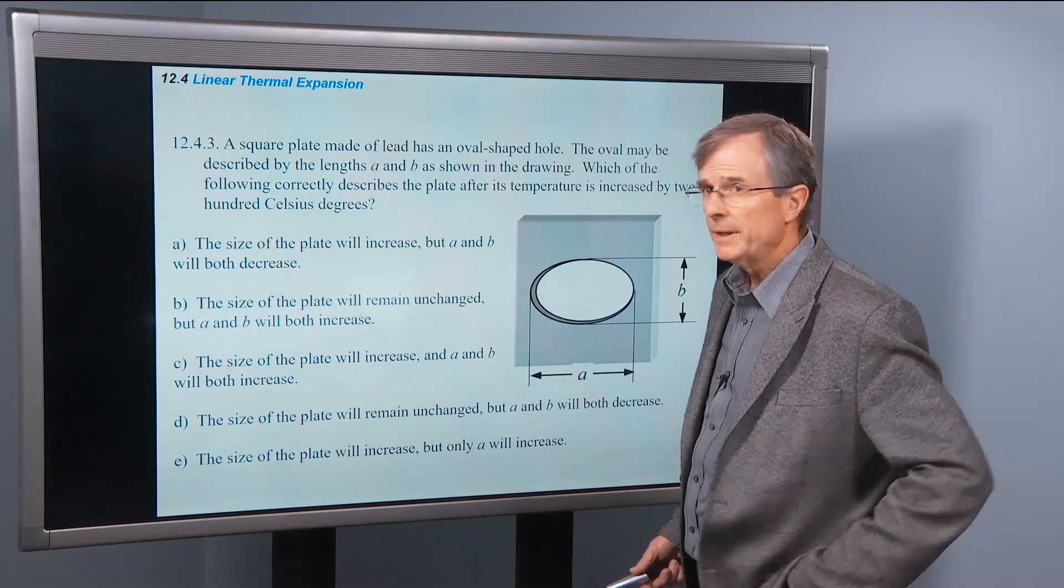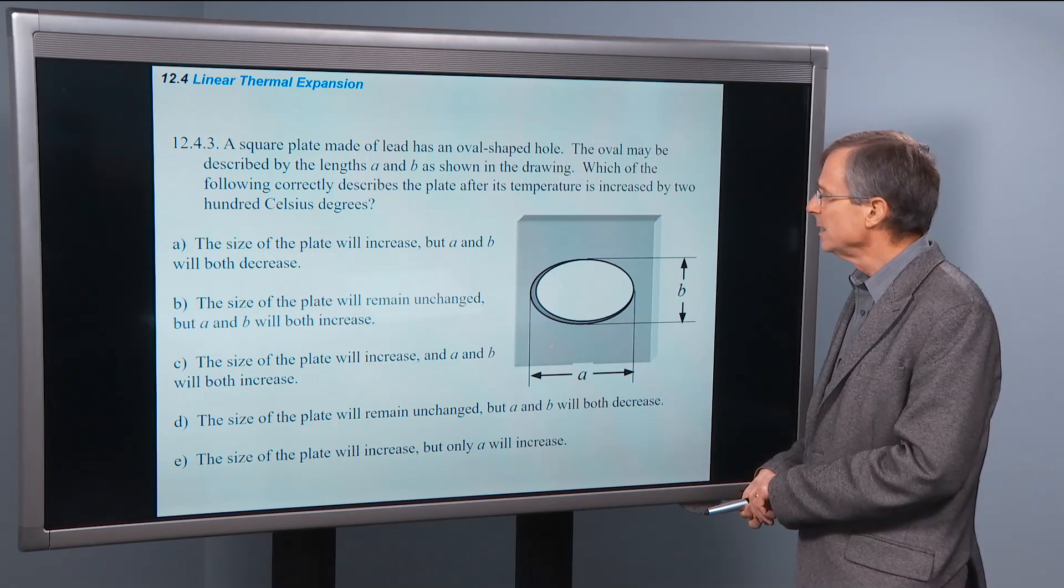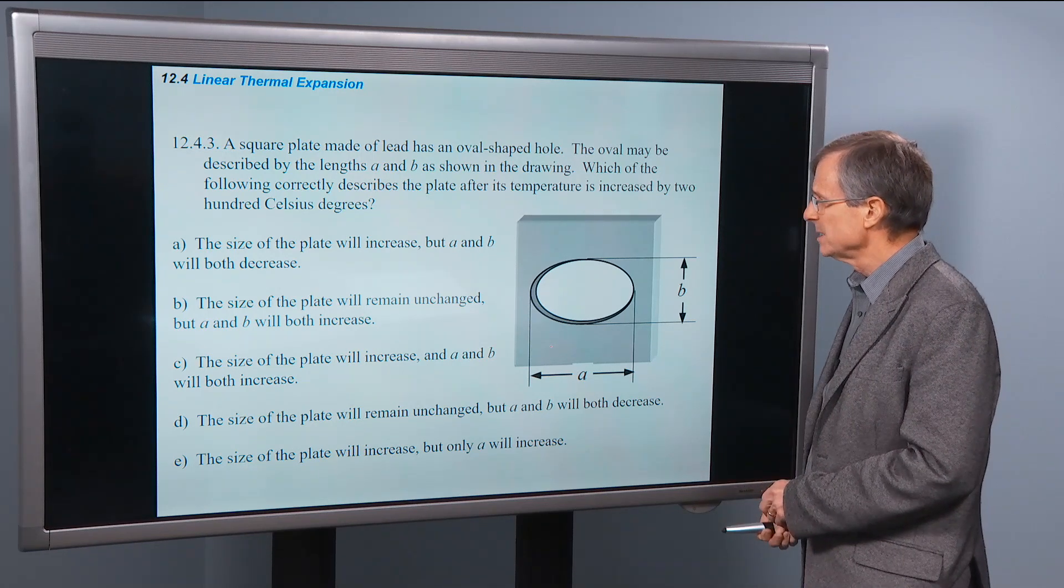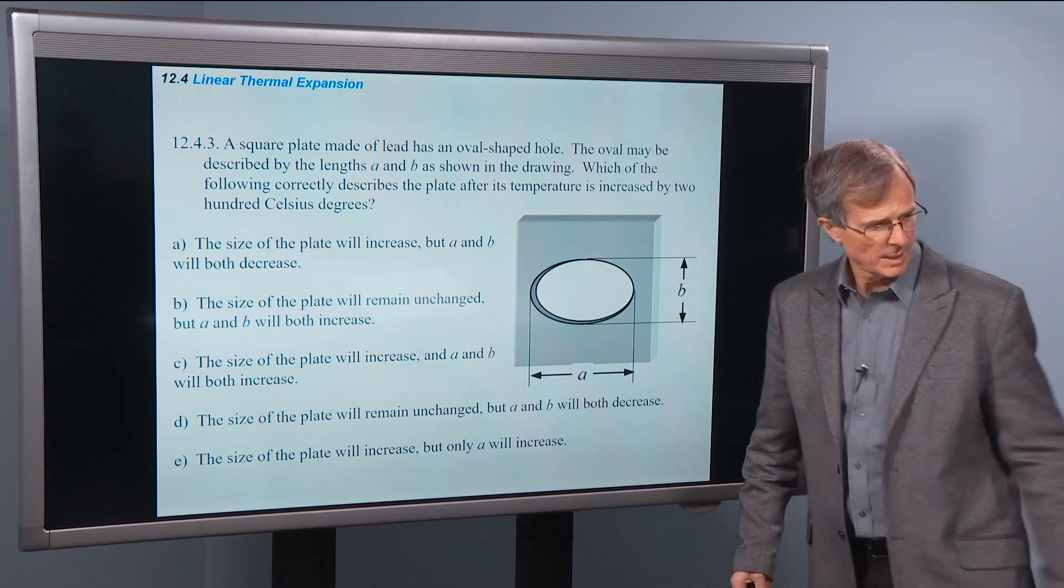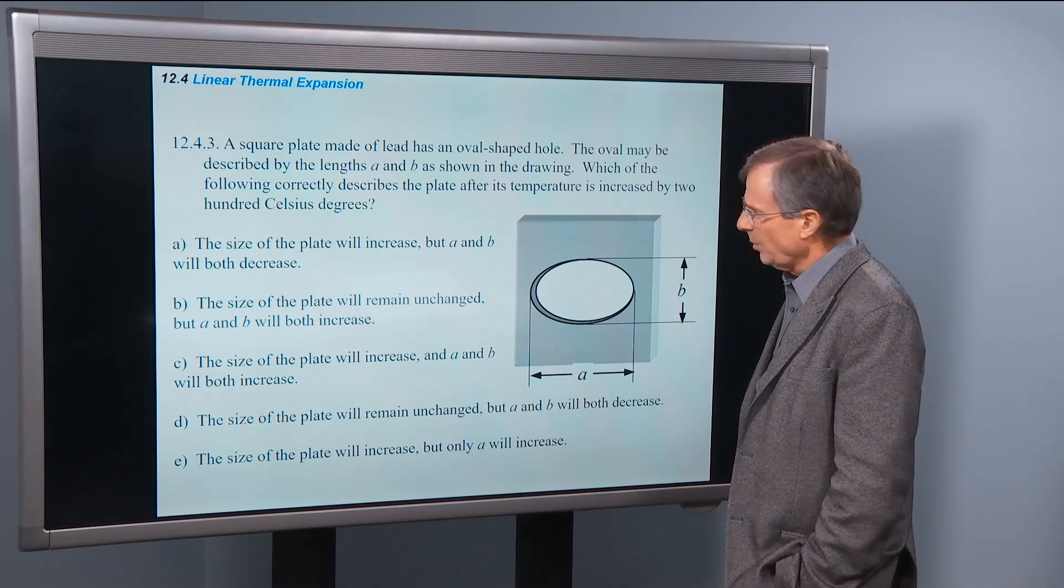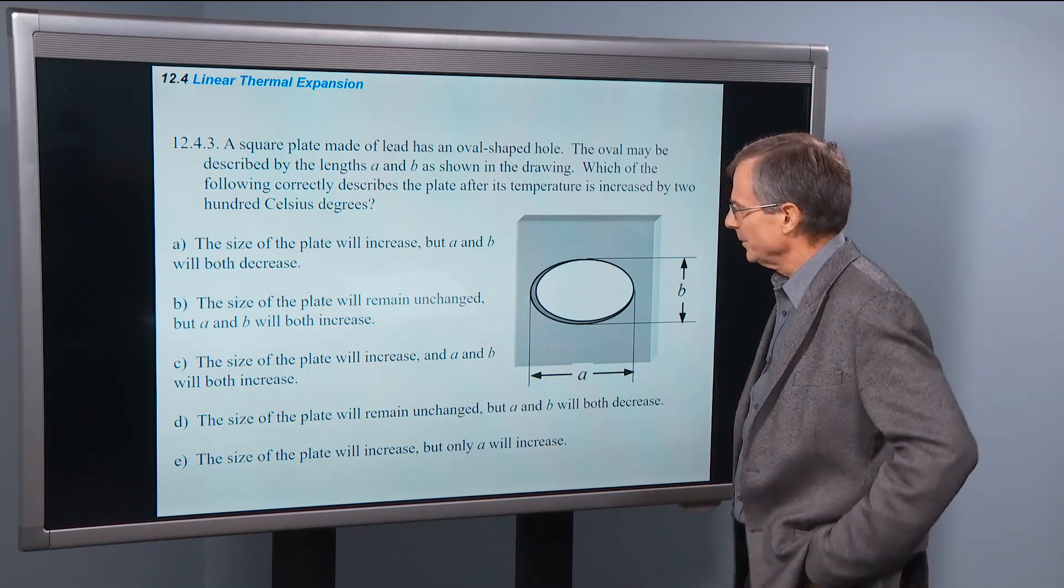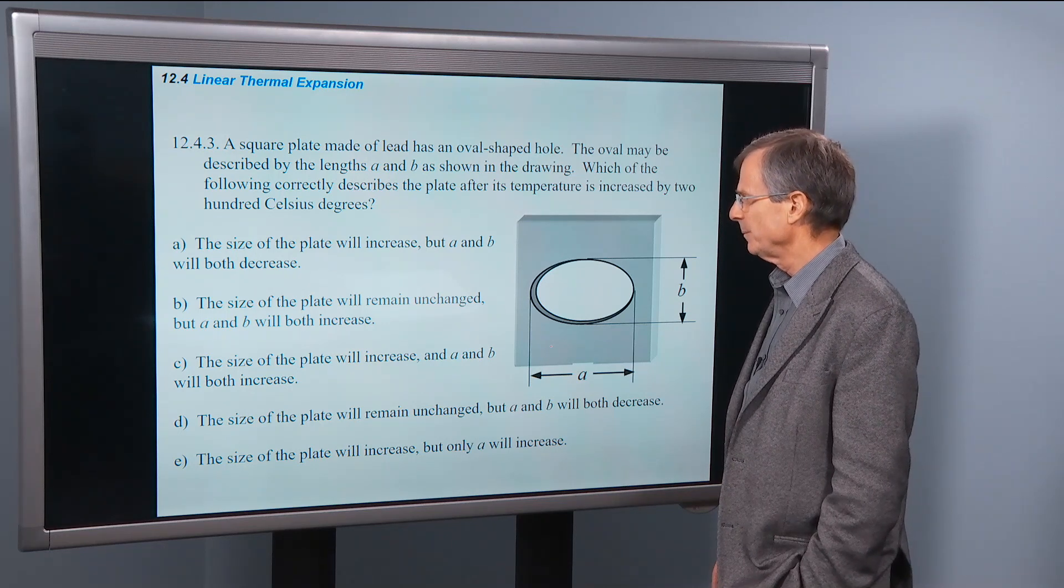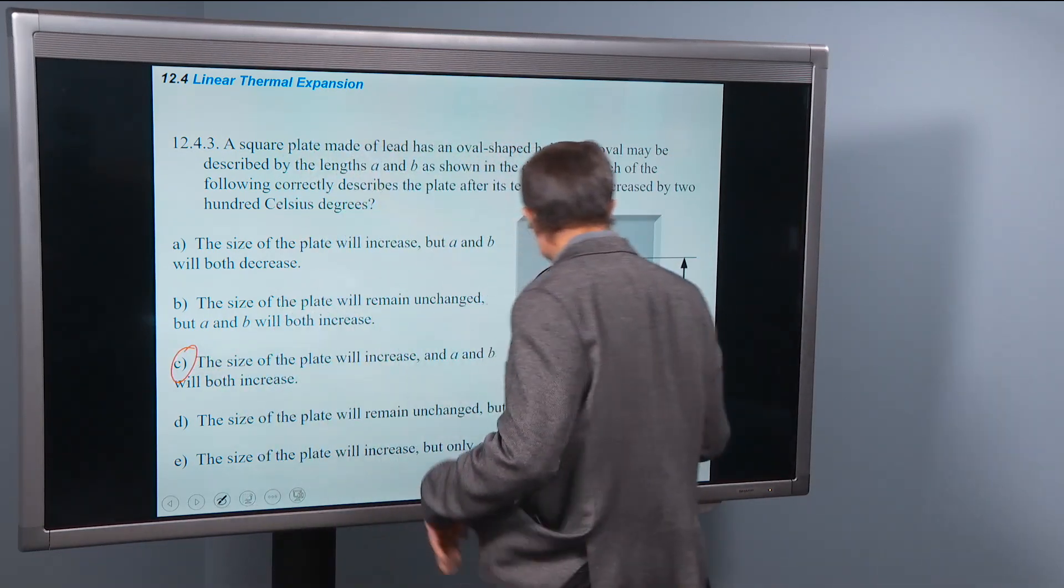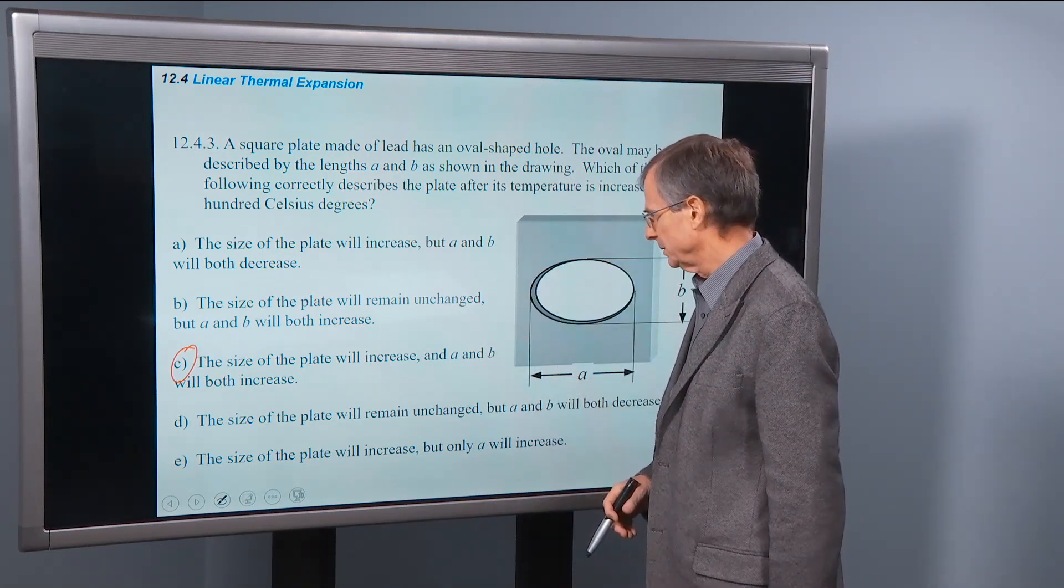A square plate made of lead has an oval-shaped hole. The oval may be described by the lengths A and B as shown in the drawing. Which of the following correctly describes the plate after its temperature is increased by 200 Celsius degrees? That's a lot. The size of the plate will increase, but A and B will both decrease. Well, what do you think? Pause the video, answer the question, come back. The size of the plate will remain unchanged, but A and B will both increase. The size of the plate will increase, and A and B will both increase. So this is the answer. The whole plate is going to increase in size, and the hole will increase as well.